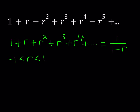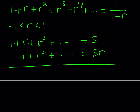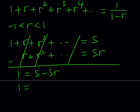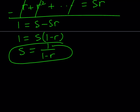Where does this come from? Write the sum as S, then multiply S by r to get r + r² + ... which equals Sr. Subtract: S - Sr = 1, so S(1 - r) = 1, giving s = 1/(1 - r). That's the sum we're looking for first.